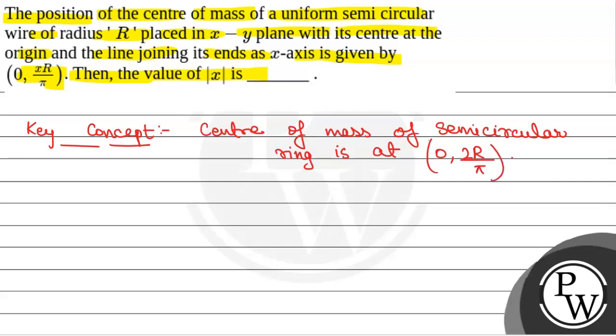If the ring is placed along y axis, suppose this is x axis and y axis. If we have a semicircular ring, this is origin and then the center of mass of the semicircular ring will be here.